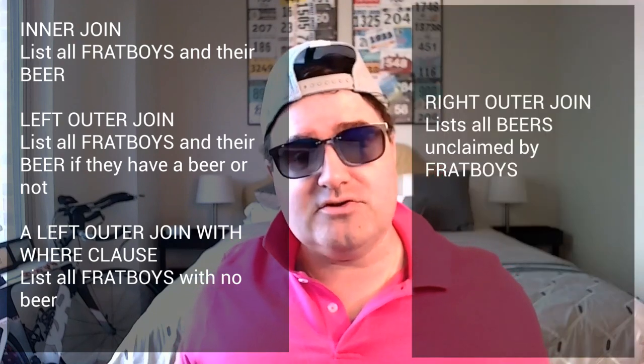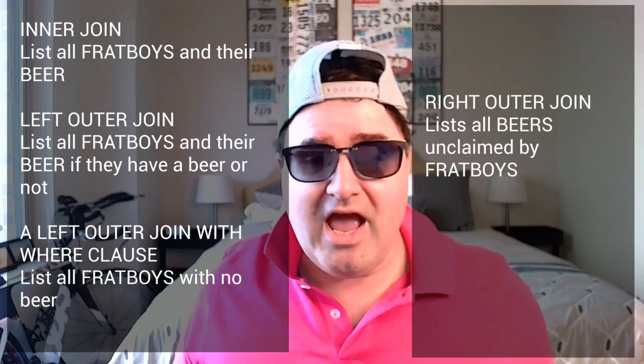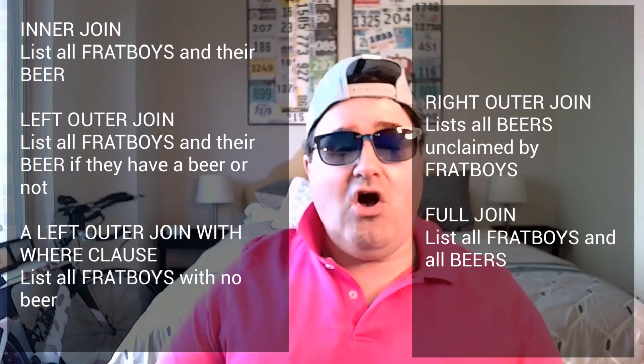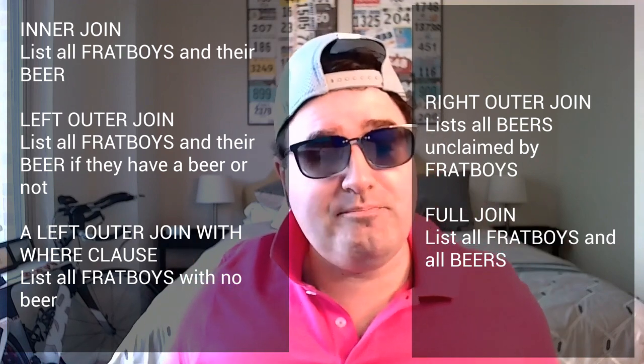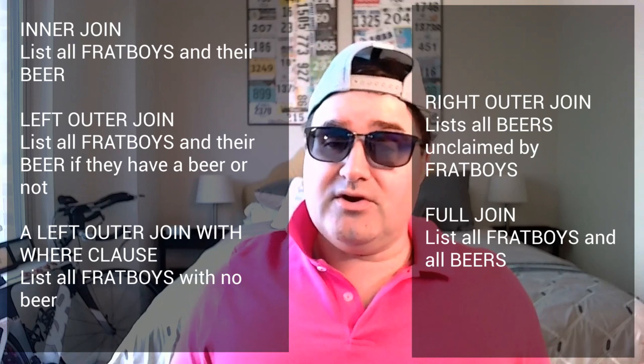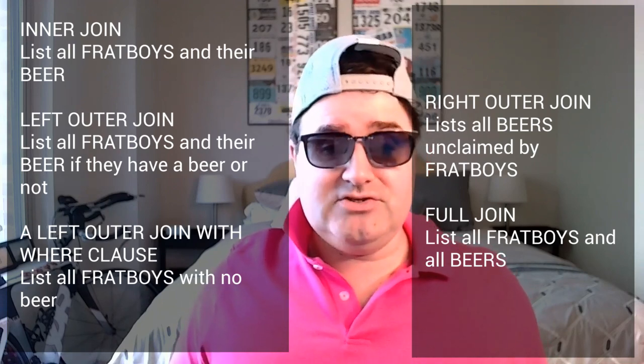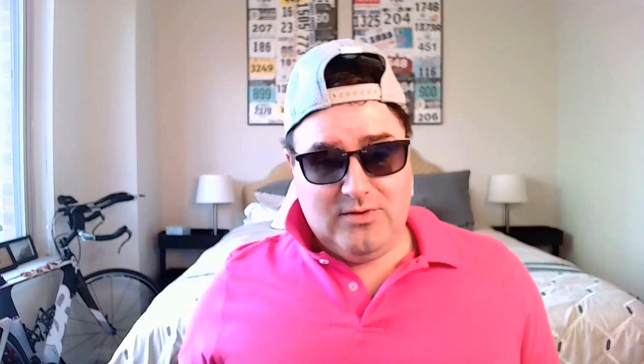So to recall: an inner join lists all frat boys and their beer. A left outer join lists all frat boys and their beer, whether they have one or not. A left outer join with a WHERE clause lists all frat boys with no beer. A right outer join lists all beers unclaimed by frat boys. And a full join lists all frat boys and all beers. If you remember this order, it may help you if you are ever asked to define joins in a job interview. I hope you have learned something today. Now let's party.